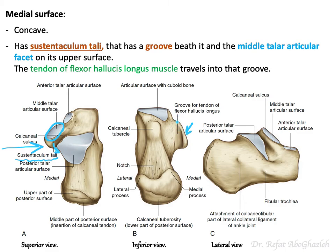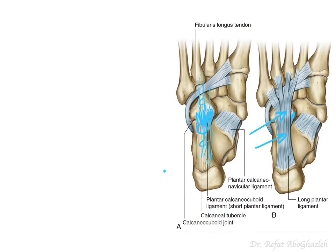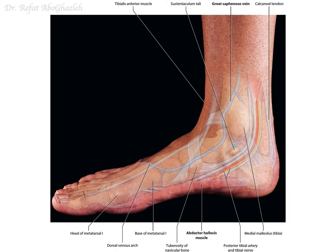Under the sustentaculum tali is a groove through which the tendon of flexor hallucis longus passes. You can feel the sustentaculum tali just inferior to the medial malleolus on your own foot. The tendon of flexor hallucis longus comes from above and passes in this groove — there are several structures here that will be covered when we discuss the foot in detail.